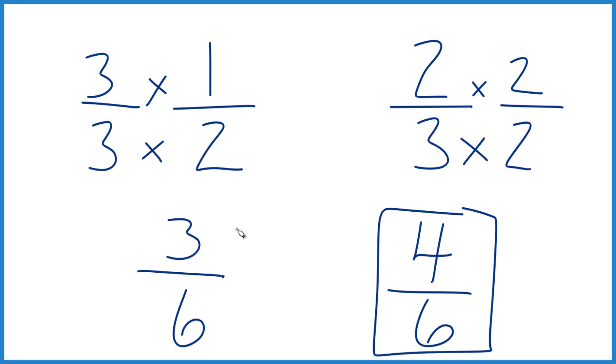If you subtract four from three, you get one, so it's one-sixth of a cup larger. Two-thirds is one-sixth of a cup larger than one-half of a cup.